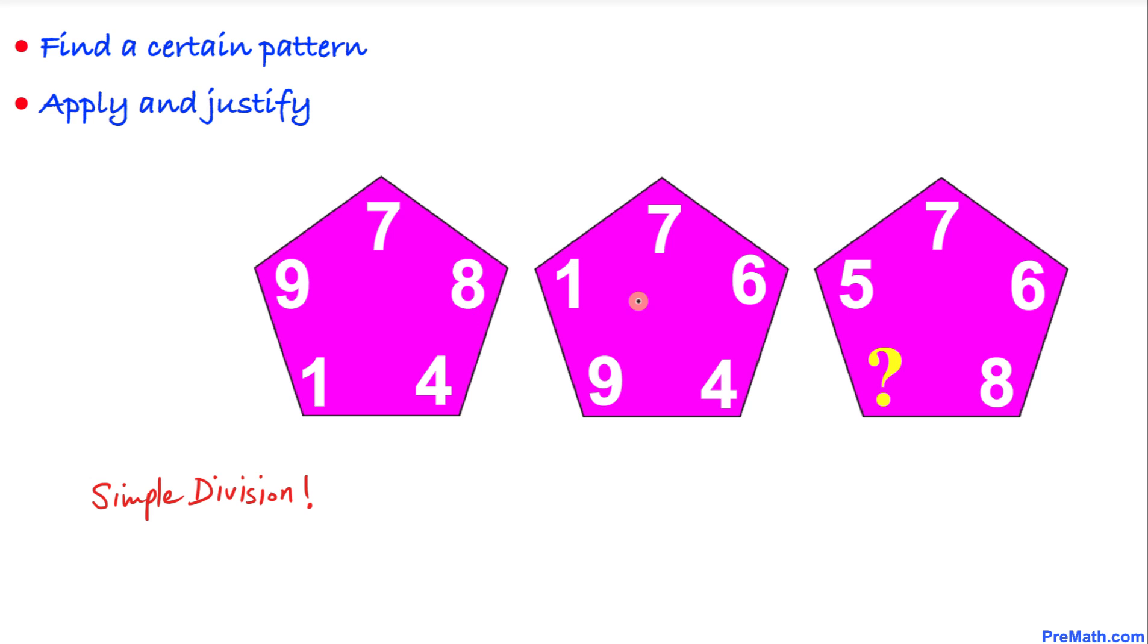Now let's move on to the middle pentagon. We can see that if we divide 19 into 76, our answer is going to be 4.